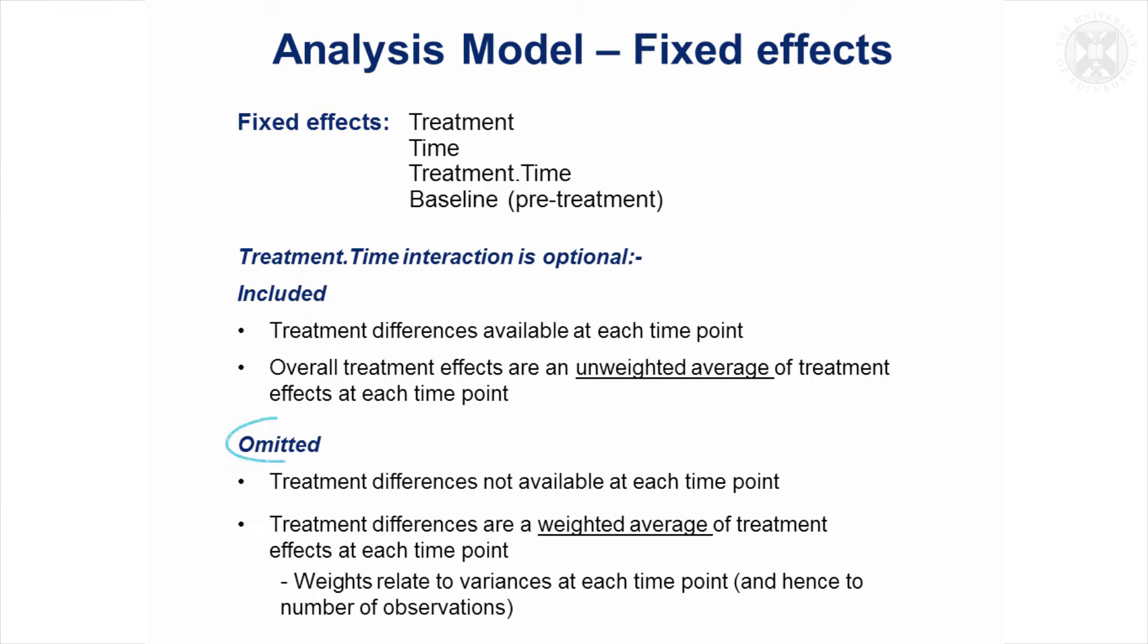If you don't have the interaction in—and that's sometimes not a bad thing to do if it's not significant or you're not interested in the treatment effect at individual time points—you might take it out. Then the treatment effects are going to be a weighted average of the treatment effects at individual time points, and the weights relate to the variances at each time point and to some extent to the number of observations at each time point.